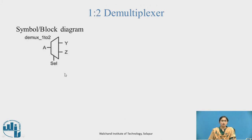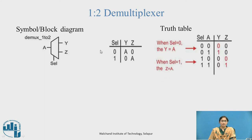This is the symbol or block diagram of the 1-to-2 demultiplexer. Input data A can be connected to Y or Z according to the select line, one at a time. From the truth table: when select line is 0, Y is equal to A. When select line is 1, Z is equal to A. A may be 0 or 1. When select is 1, Y is equal to 0.